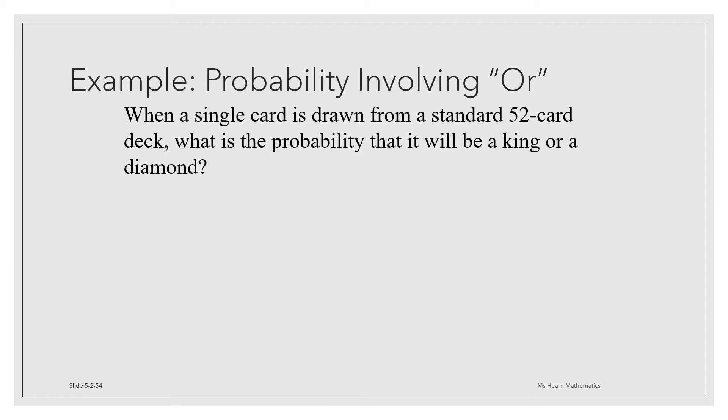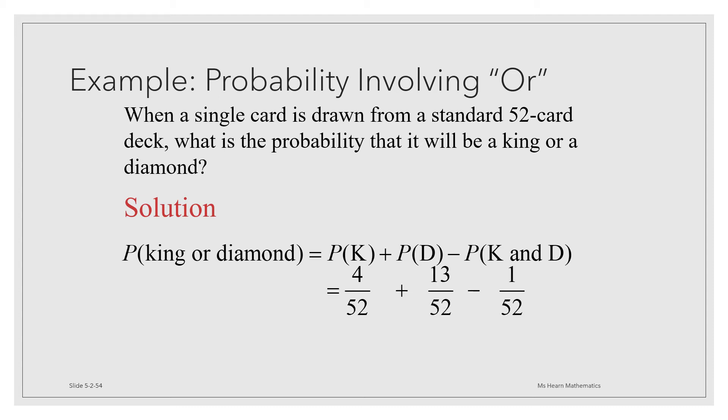So to find the probability that we will get a king or a diamond, we have to find the probability of drawing a king, the probability of drawing a diamond, and the probability of drawing both. Because the probability of a king or a diamond is the probability of a king plus the probability of a diamond minus the probability that it's both a king and a diamond.